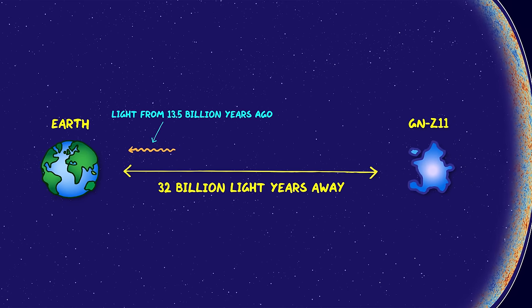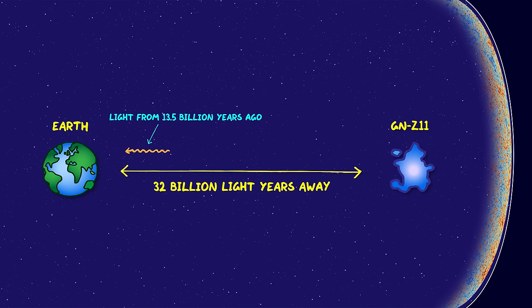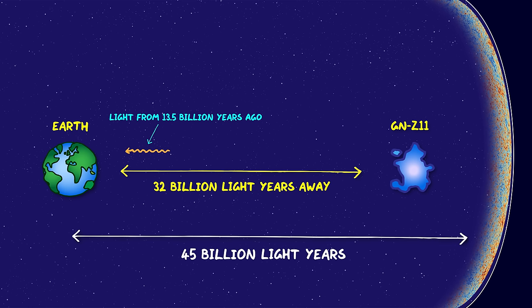If we keep looking beyond GNZ 11, we keep looking further back in time until we hit the limits of the cosmic horizon, the cosmic microwave background and the Big Bang. Although the universe is 13.8 billion years old, the cosmic horizon is further away at 45 billion light-years. And this difference is because of the cosmic expansion.